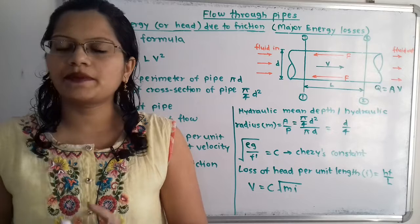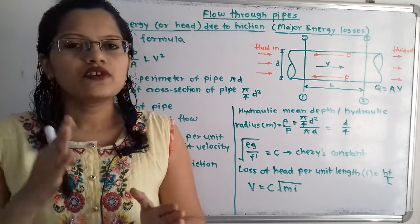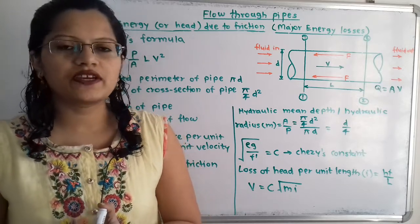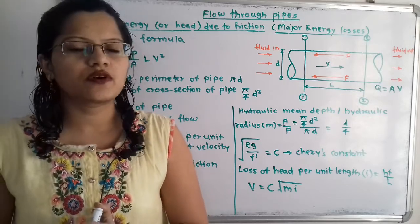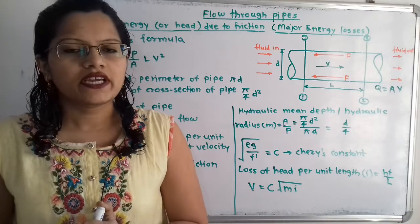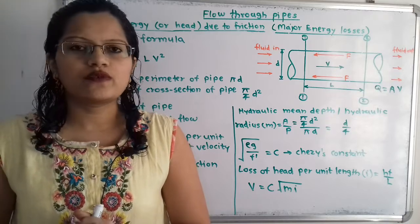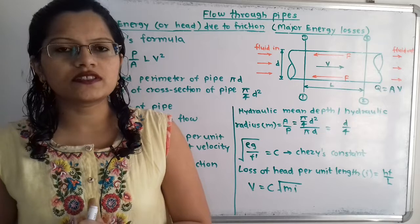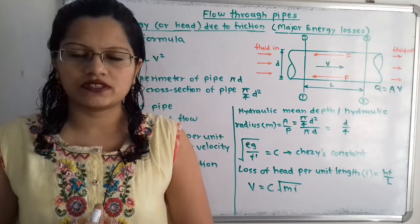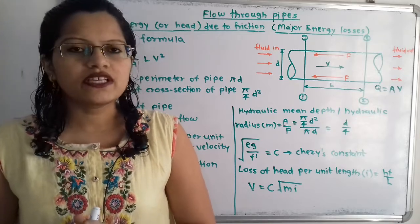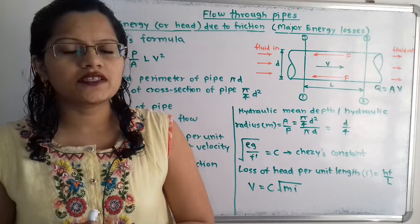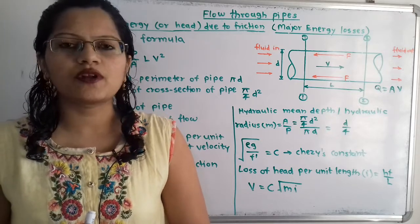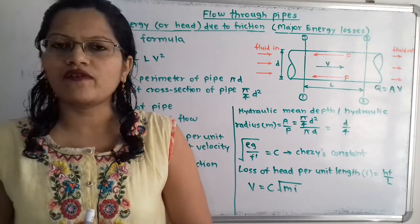Hello friends, this is Priyanka. Today we are going to understand some basic formulas for the loss of head or energy due to friction. These losses are also considered as the major losses. In this video, we are going to understand the formula — Chezy's formula — with the help of a diagram.